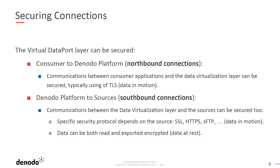We will end this course by reviewing some other mechanisms available for securing the connections on the data virtualization layer, as Virtual Dataport can secure the access from consumers to sources in a secure and encrypted manner. Generally, the consumers either connect to the Denodo Platform, which is known as a northbound connection, or the Denodo Platform connects to different data sources, which are known as southbound connections. In either case, the data can be protected and made secure such that it moves seamlessly from one point to another without compromising security. Certain protocols, depending on the connection, can be set up to achieve this level of security.